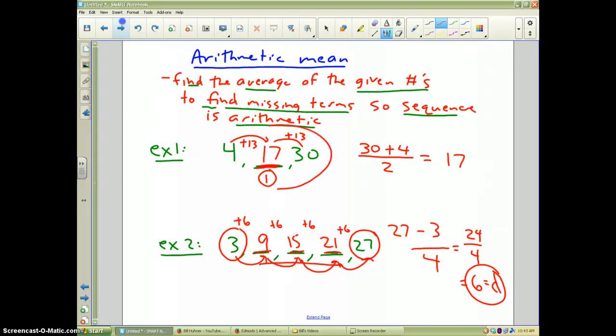Now, that would also work for this problem, too, if you wanted to do it that way. Because 30 minus 4 divided by 2 would be 13. And if you notice, that's our common difference. So that's how you find arithmetic mean and how you find missing terms. And that summarizes what arithmetic sequences are.